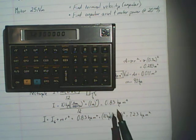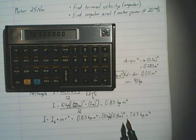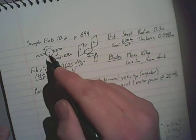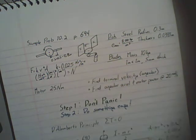So each of those blades goes from a mass moment of inertia of 0.83 kilogram meters squared to 7.23, just from the fact of moving it from a center of rotation at the center of the blade to a center of rotation a tenth of a meter away. So it's quite a large number that changes.